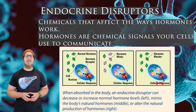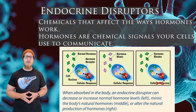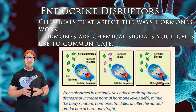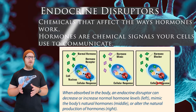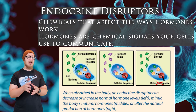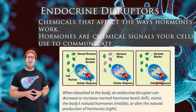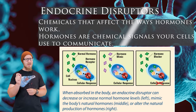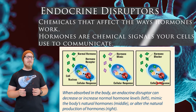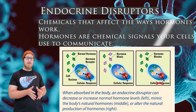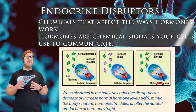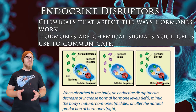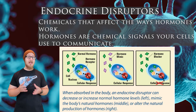Endocrine disruptors are chemicals that affect our endocrine system — the hormones in our bodies. Hormones are chemical signals that our cells use to communicate with each other, and every hormone has a specific shape that matches a receptor protein on our cells. Endocrine disruptors are chemicals shaped just close enough to our actual hormones; they work by either blocking our hormones from attaching to their proper receptor, or they mimic them so closely that they induce too much of a response. The old pesticide DDT is an example of an endocrine disruptor.